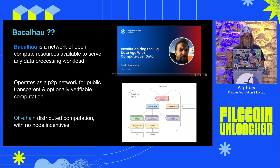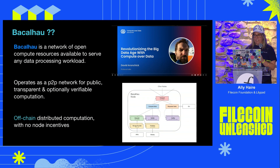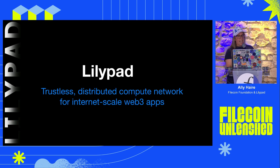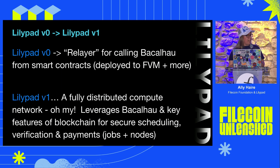This is where projects like Bacalhau and Lilypad live. Bacalhau is a peer-to-peer open computation network — a network of nodes which provides a platform for public, transparent, and optionally verifiable computation. I won't say too much about it; if you want to hear more, stick around for David Aronchik's talk later. So if Bacalhau is a distributed compute network, what is Lilypad? Lilypad leverages the power of Bacalhau and combines it with on-chain guarantees and crypto-economic incentive models.